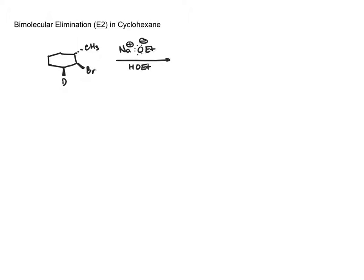In a bimolecular elimination or E2 mechanism you're always producing an alkene as the product and the mechanism has to proceed in a very specific manner. The specific example we're going to look at is this secondary bromide in the cyclohexane system.